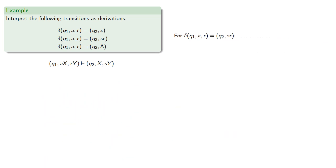For δ(q₁, a, r) equals (q₂, sr), the state changes to q₂, and the top symbol changes from r to sr. This is the pushdown part, since the symbol r has been pushed into the second place.